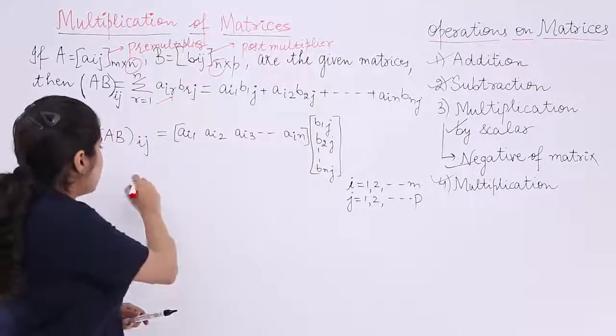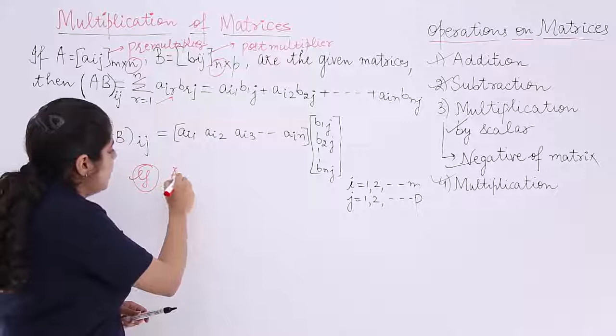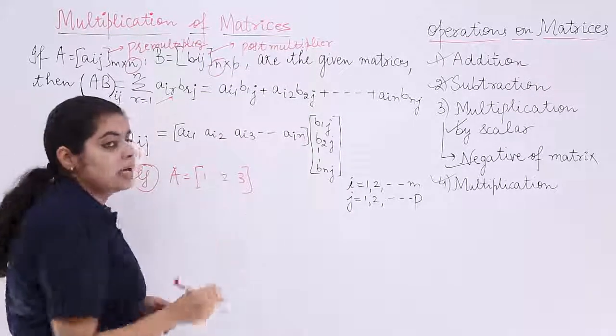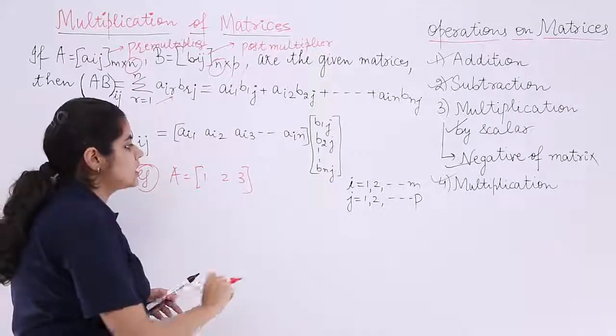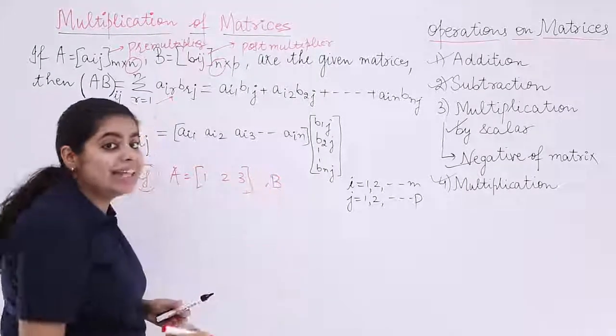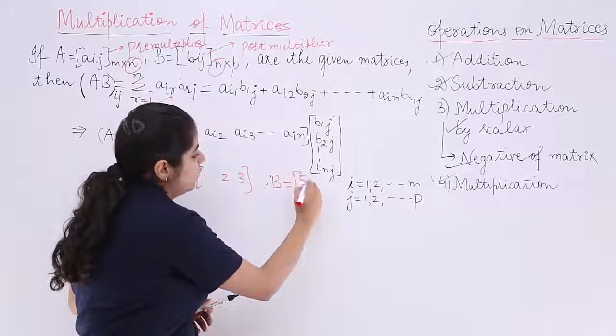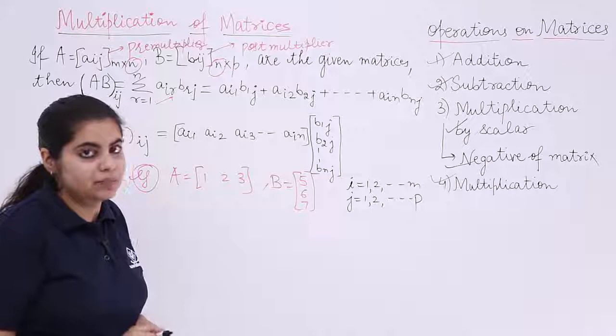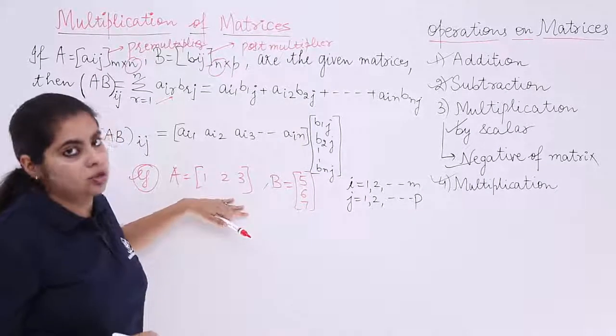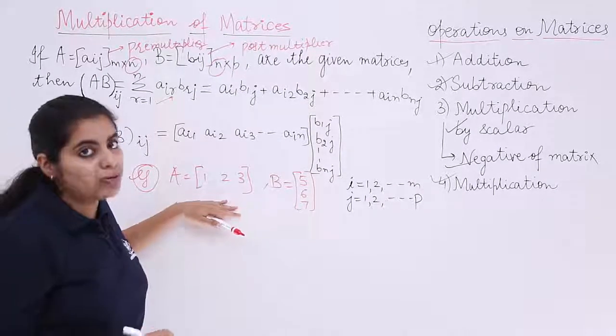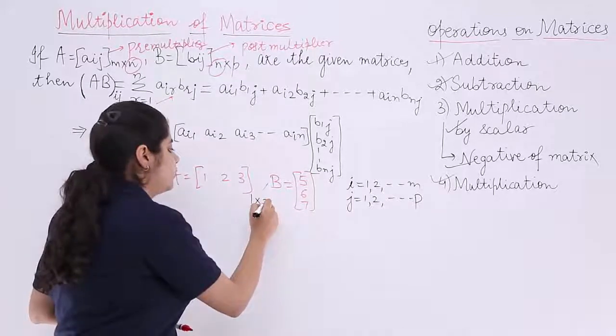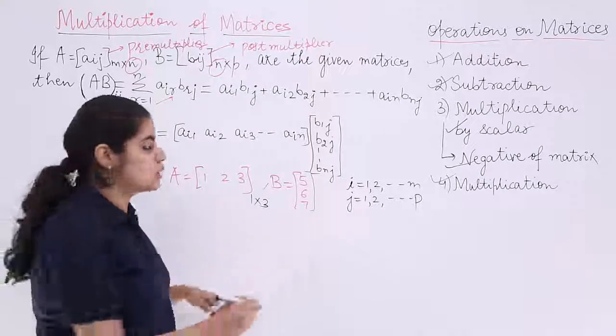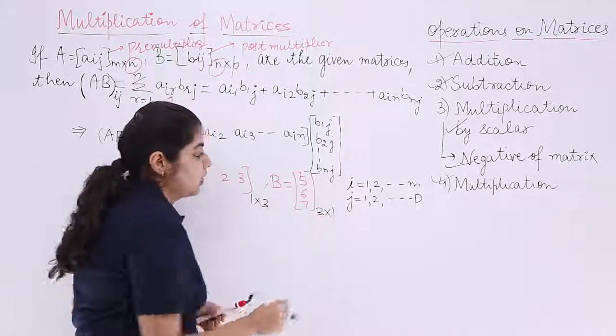Let's see an example. I have a given matrix as A is equal to say 1, 2, 3 and I have another matrix wherein B and that is equal to 5, 6, 7. Taking simple example just to make you understand. Now, what is the order of the given matrix A? 1 row, 3 columns. What about this given matrix? This matrix is having 3 rows, 1 column.